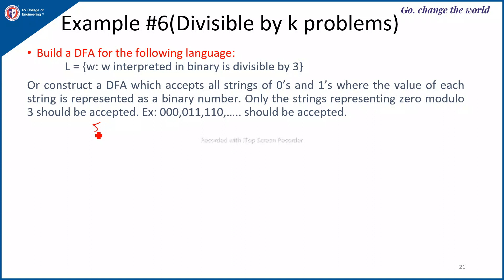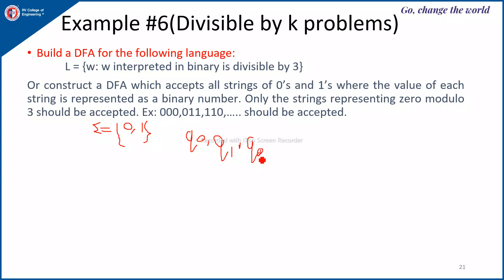For such problems, first identify sigma. Since it is binary, the alphabet is {0, 1}. Next, since it is modulo 3, the set of states will be Q0 representing remainder 0, Q1 representing remainder 1, and Q2 representing remainder 2. The final state, since it must give remainder 0, is Q0.